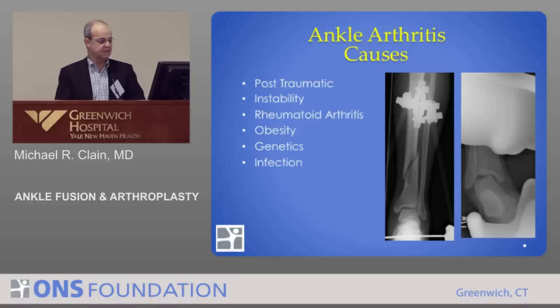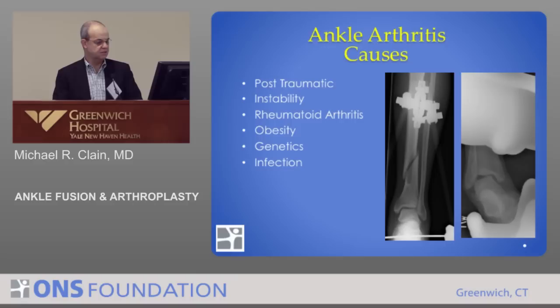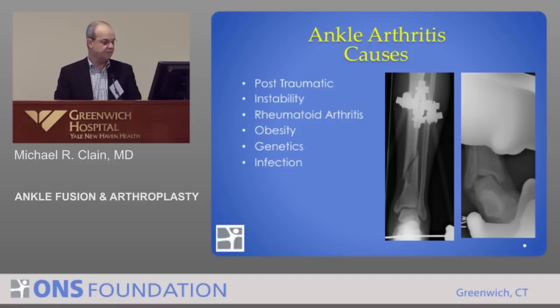Part of that reflects who gets ankle arthritis. A big group is post-traumatic — some young guy coming off his motorcycle, messing up his tibia with a crack that goes into the ankle. Another cause is instability: people who have very loose ankles and keep rolling them. They may not have pain but keep rolling in the wrong direction, and that can wear the ankle out over time.